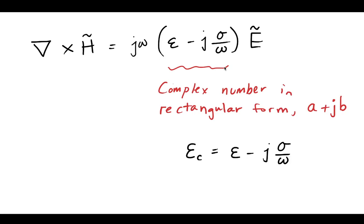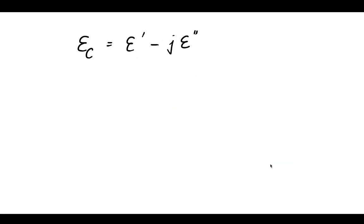Therefore, we can redefine this term as a complete complex number. We can say that we have this permittivity epsilon sub C equal to epsilon minus j sigma over omega. So, we've now defined this complex permittivity where this C stands for complex in our textbook.